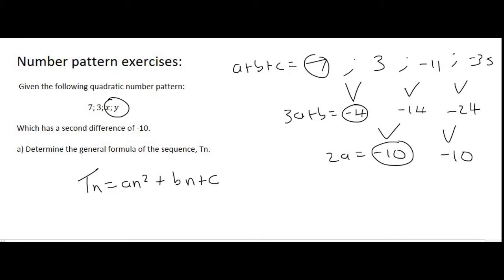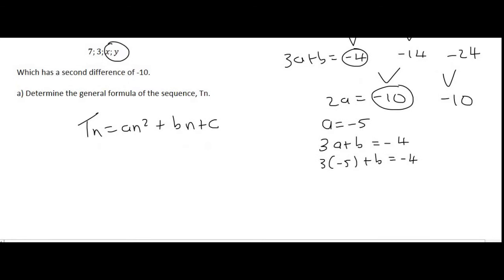With this technique, you always start from the bottom, where it says that 2a is equal to minus 10. And so, that means that a will be equal to minus 5. Then it says that 3a plus b equals minus 4. a has a value of minus 5 plus b equals to minus 4. If we then solve, that's minus 15 plus b equals to minus 4. And if you solve for b, you're going to get an answer of 11.